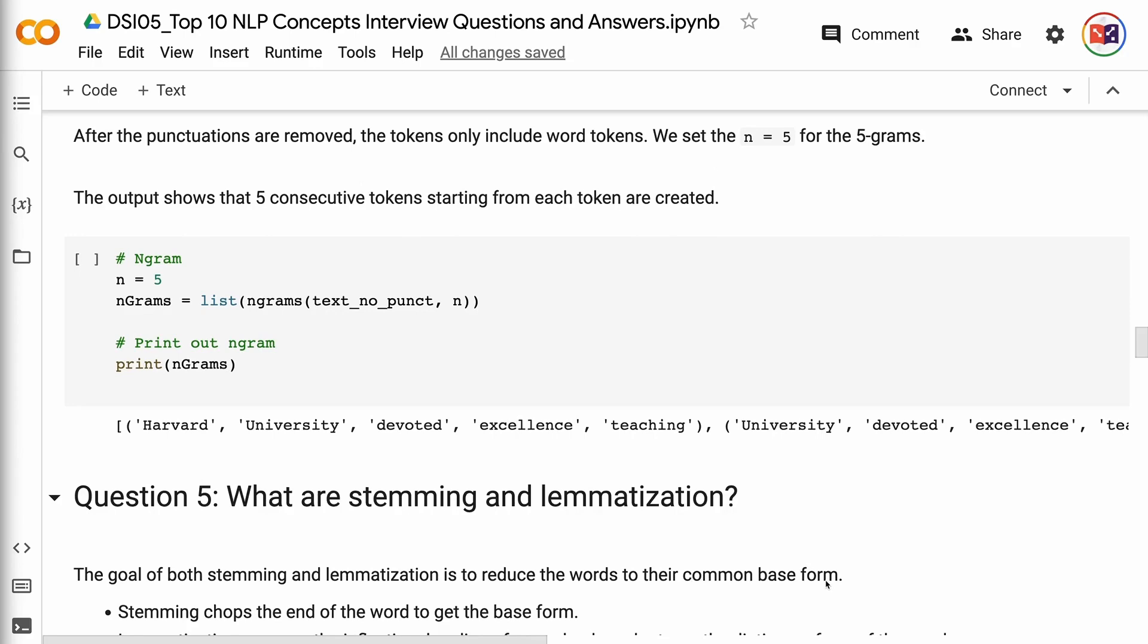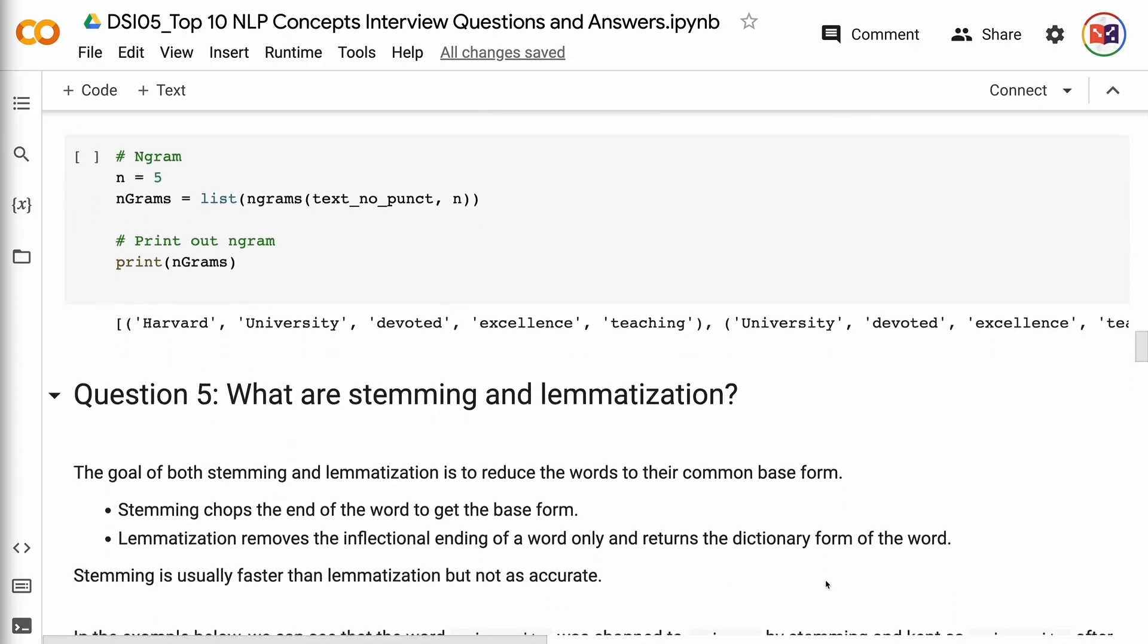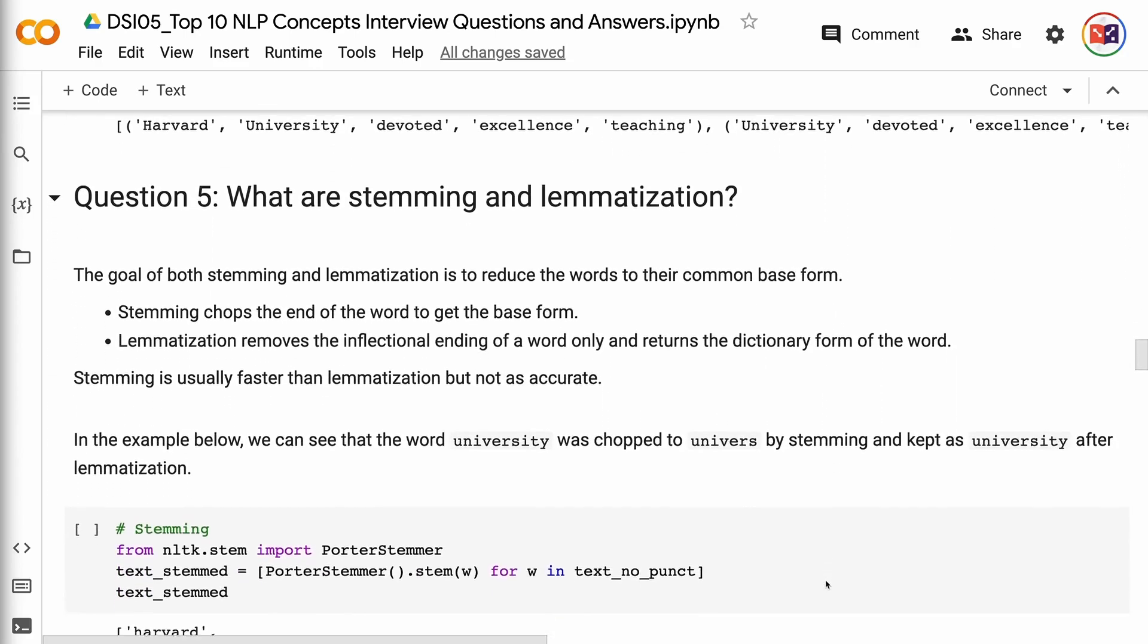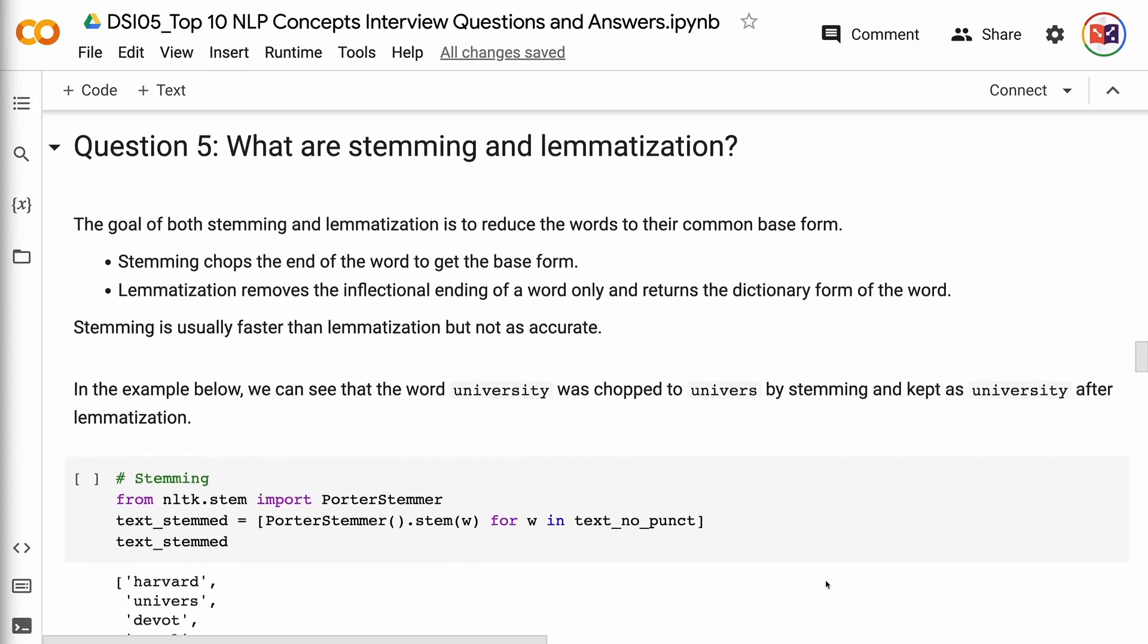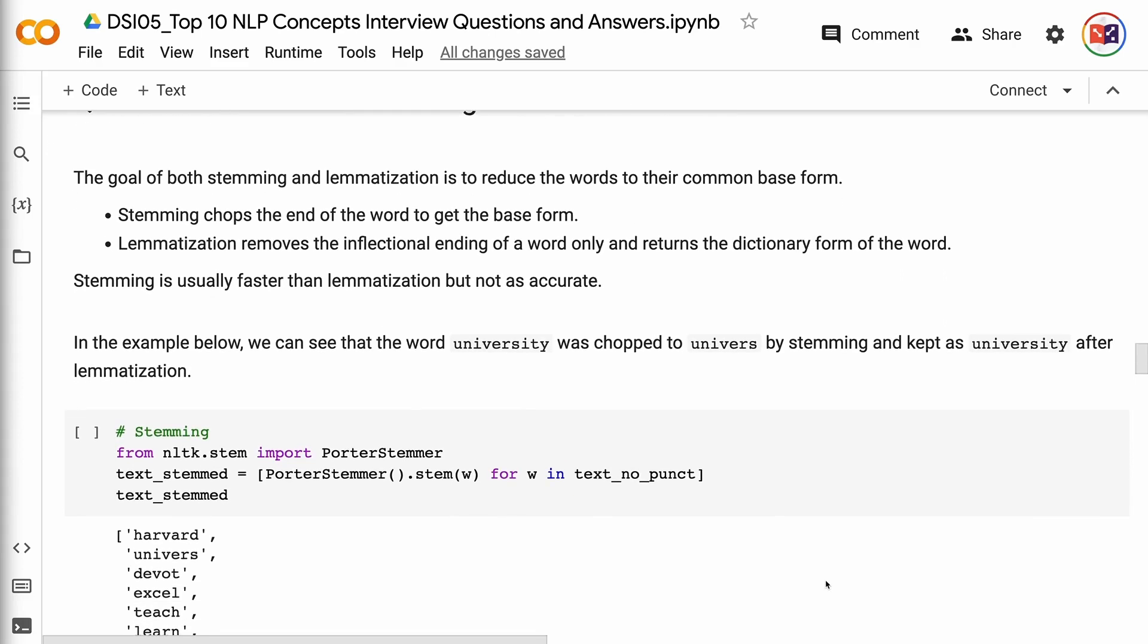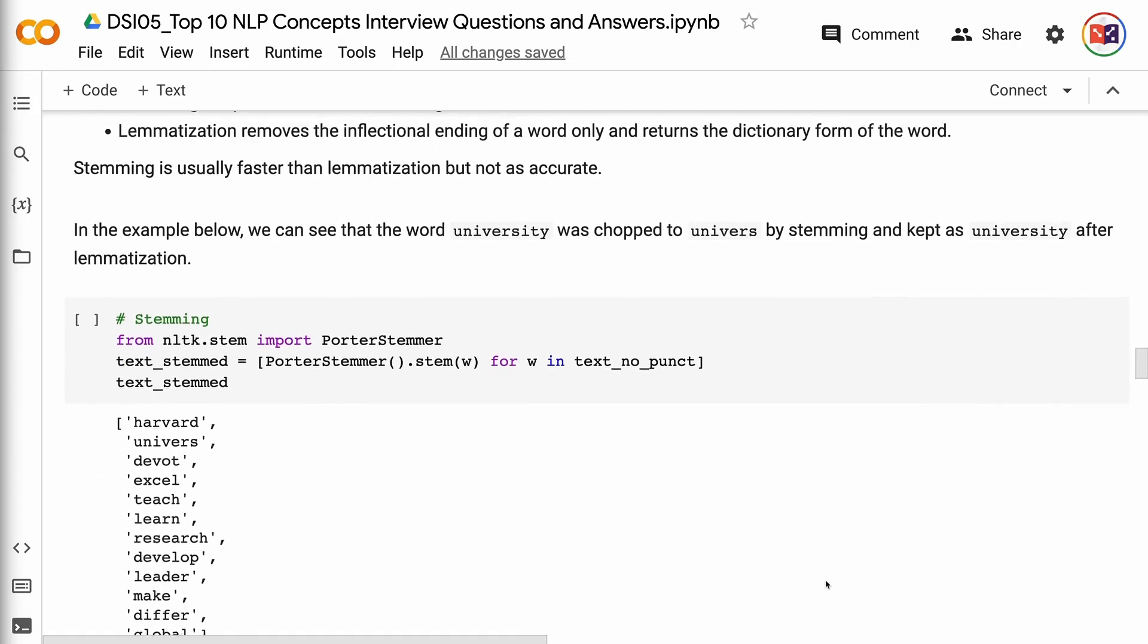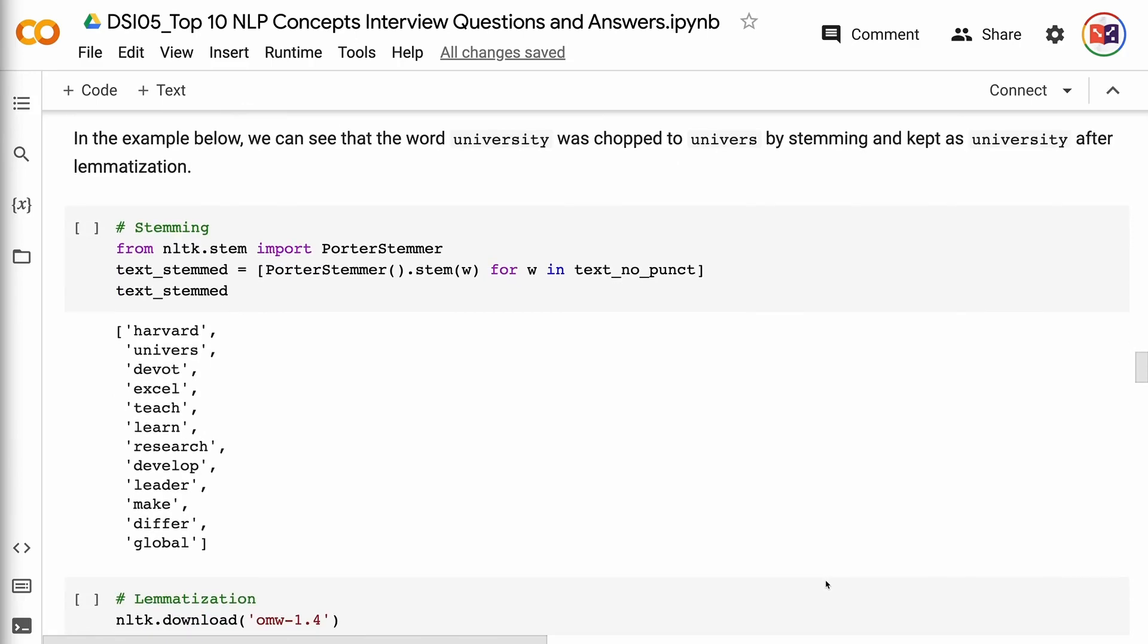Question 5: What are stemming and lemmatization? The goal of both stemming and lemmatization is to reduce the words to their common base form. Stemming chops the end of the word to get the base form. Lemmatization removes the inflectional ending of a word only and returns the dictionary form of the word. Stemming is usually faster than lemmatization but not as accurate. In the example below, we can see that the word university was chopped to universe by stemming and kept as university after lemmatization.